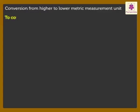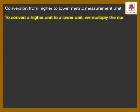To convert a higher unit to a lower unit, we multiply the number by 10 or 100 or 1000.